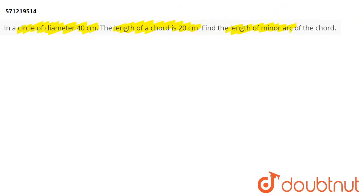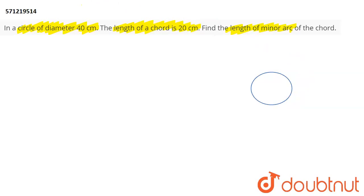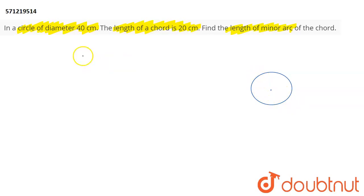So how do we deal with these types of questions? First of all, let us draw a circle. Given that diameter is equal to 40 cm — the diameter of a circle is any line joining two directly opposite points on the circle and passing through the center. Since diameter equals twice the radius and diameter is 40 cm, we can deduce that the radius is 20 cm.